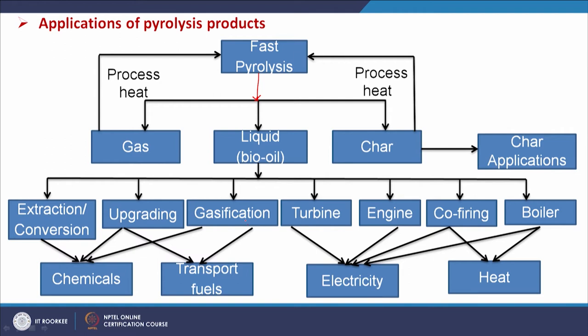Bio-oil can be used in turbines, engines, for co-firing in co-generation plants, or in boilers. Conversion and gasification upgradation can yield different types of chemicals and transportation fuels, while turbine, boiler, engine, and co-firing applications can give us electricity and heat. These are the different applications of liquid fuel obtained through pyrolysis of biomass and waste.